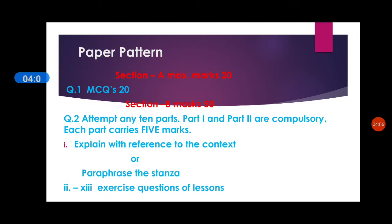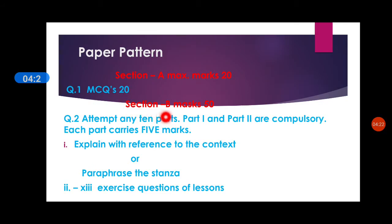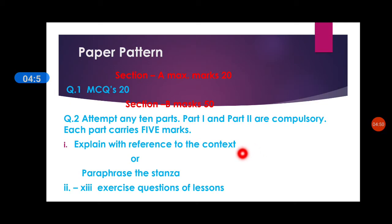Now about the paper pattern. Section A has maximum marks of 20, and question 1 is MCQs worth 20 marks. Section B has 50 marks. Question 2 requires attempting any 10 parts; parts 1 and 2 are compulsory, and each part carries 5 marks. You are going to have explanation and reference to context, with an option for paraphrasing a stanza or doing the explanation. The remaining parts 2 to 13 are exercise questions from the lessons, giving you three options. Question 2.1 is compulsory.